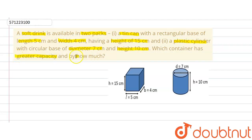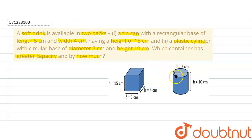So in the question we are given that a soft drink is packed in two kinds of packs — one is a cuboidal shape and the other is a cylindrical shape. We are given the dimensions of both packs and we are asked to find out which of the two has greater capacity and by how much. So let's do this question.